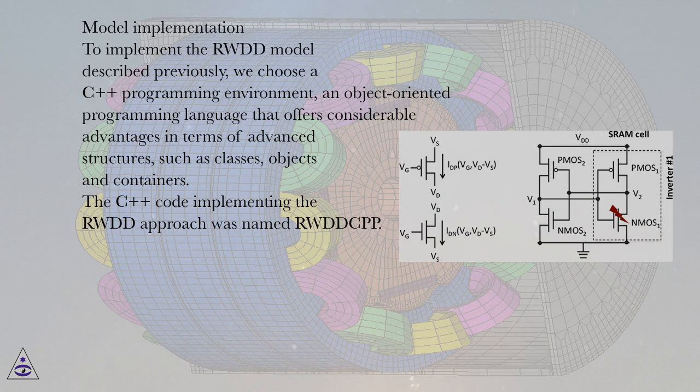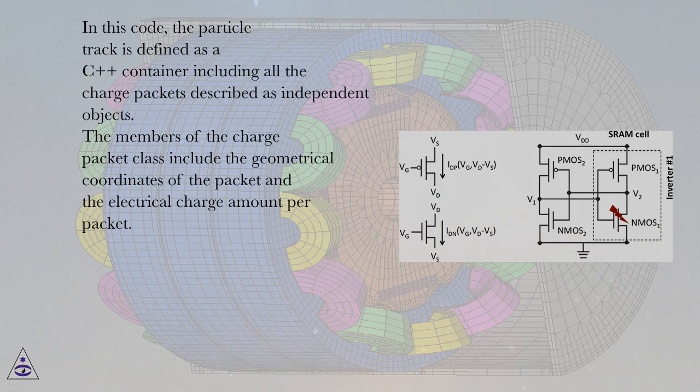Such as classes, objects and containers. The C++ code implementing the RWDD approach was named RWDD-CPP. In this code,